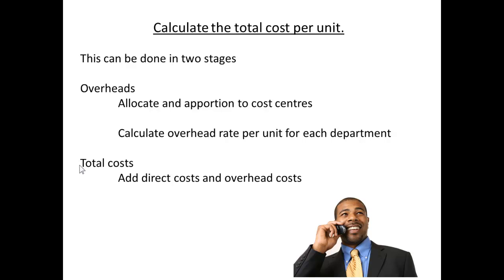So let's see what the total cost per unit is. We can do this in two stages: first, calculate the overheads by allocating a portion to cost centres; then calculate the overhead rate per unit for each department. Finally, for the total costs, add the direct costs per unit to the overhead costs per unit, and you have the total cost per unit.